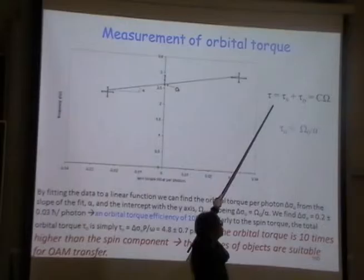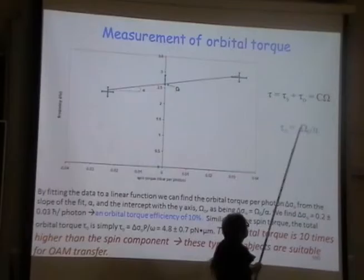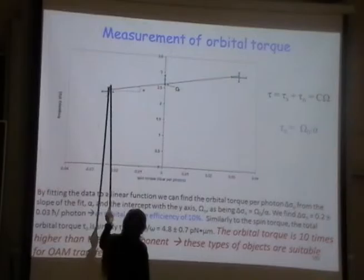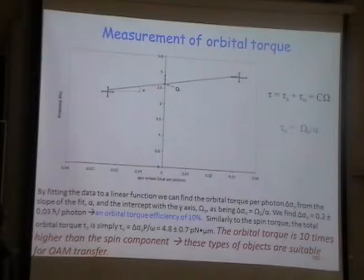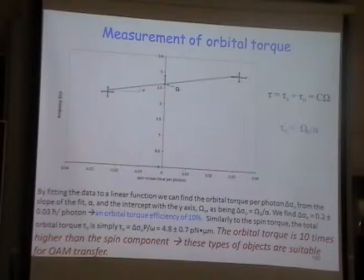The total torque acting on the object is the sum of spin torque plus orbital torque — it's a constant times omega, the rotation rate. I can then get my orbital angular momentum as omega-0 over alpha. Taking three measurements — they are pretty much on one line — so this approximation works. By fitting the data to a linear function, I can determine what sort of orbital angular momentum I have. The orbital angular momentum is ten times higher than the spin component.